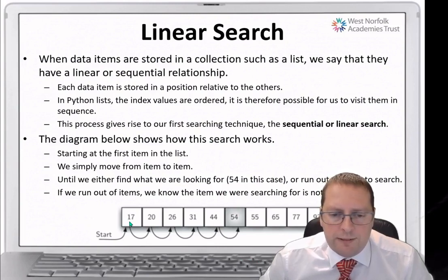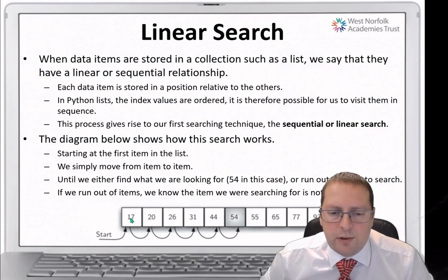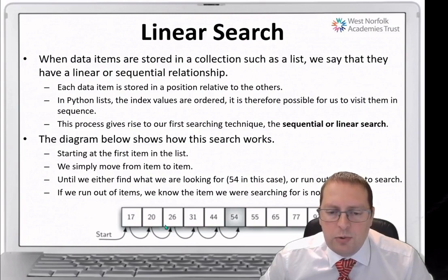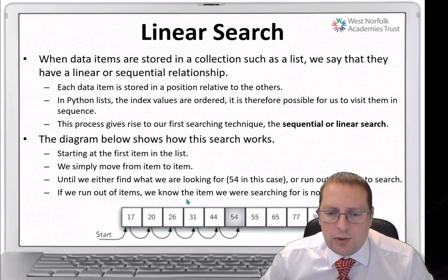We start at the first item — location 0, which contains 17. It's not 54, so we move on to the next item: 20. Not that either, so we move on to location 2. We move to 31, not there. We move to 44, not there. We then find 54 here at location 5. So we found it at index 5.